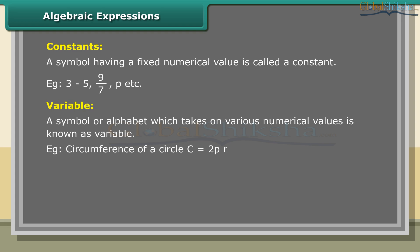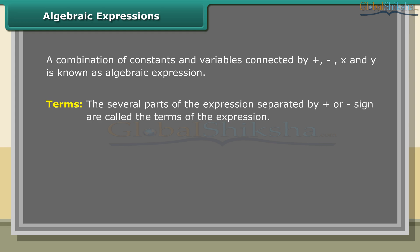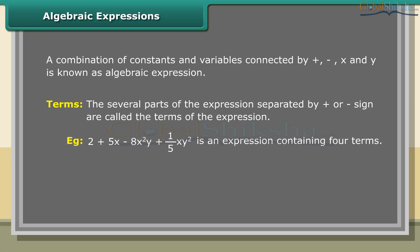For example, the circumference of a circle C equals 2πR, where R is the radius of the circle. Here 2π are constants and C, R are variables. An algebraic expression is a combination of constants and variables connected by plus, minus, multiplication and division. The several parts of an expression separated by plus or minus signs are called the terms of the expression. For example, 2 + 5x − 8x²y + (1/5)xy² is an expression containing four terms.